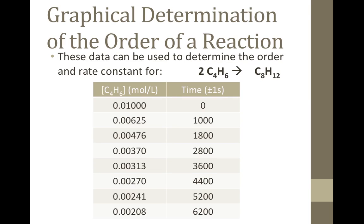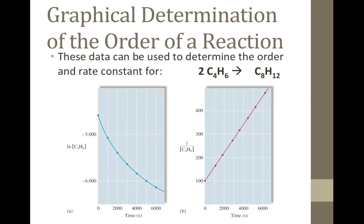Here we have another reaction and some data. Let's try the first order integrated rate law plot — the natural log of C4H6 concentration versus time — and also the second order integrated rate law plot — 1 over C4H6 concentration versus time. On the first order plot to the left, we do not get a linear plot, so it can't be first order with respect to C4H6. But on the right, the second order plot, we do see a straight line. That means the reaction is second order with respect to C4H6, and the slope of that line gives us the rate constant.